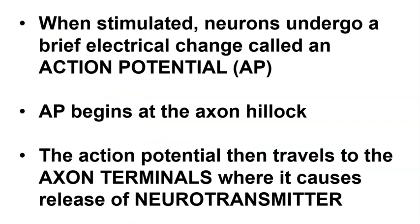When a neuron is stimulated — either by a neurotransmitter from another neuron or by some other stimulus like sound, touch, pressure, or temperature — the neuron will create an action potential in response. The action potential is a brief electrical change across the plasma membrane. Action potentials begin at the axon hillock, where the axon connects to the neuron soma, and spread like a wave down the axon, arriving at the axon terminals where they cause the release of neurotransmitter stored there.